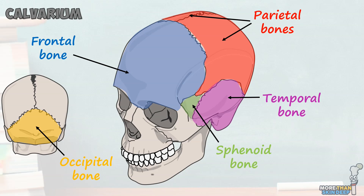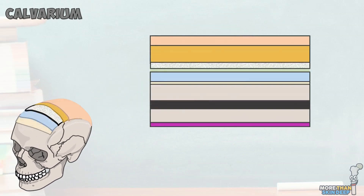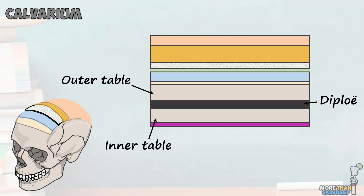A feature unique to the bony calvarium is its cross-sectional structure — it's arranged like a sandwich, providing a tough scaffold to hold the head together but allowing enough flexibility to bend and absorb compressive forces. The outermost layer is the cortical outer table, followed by a spongy marrow layer known as the diploë, and finally a slightly thinner inner cortical table. Deep to the inner table is the endosteal dura mater, which helps to enclose and protect the brain.